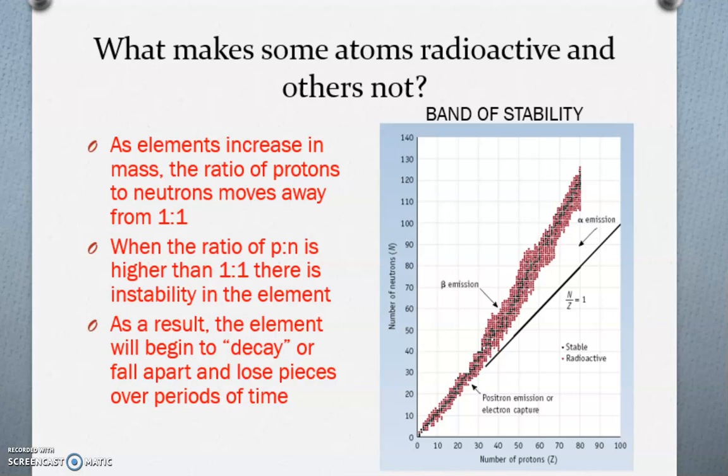In order to do that, we need a band of stability, which is this chart right here. You can see that if we look at the x-axis, the x-axis is our number of protons and the y-axis is our number of neutrons.